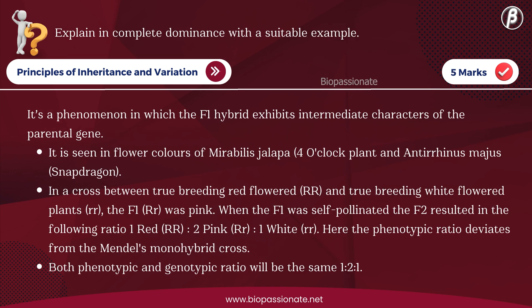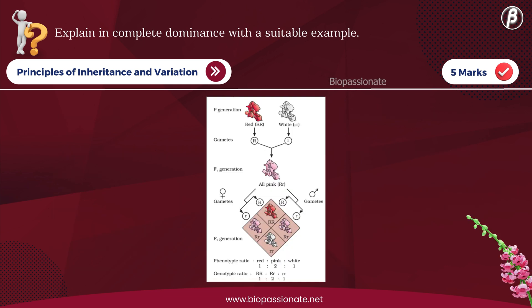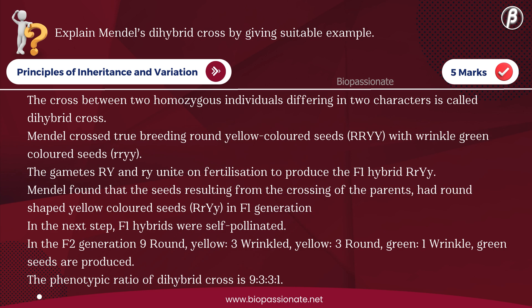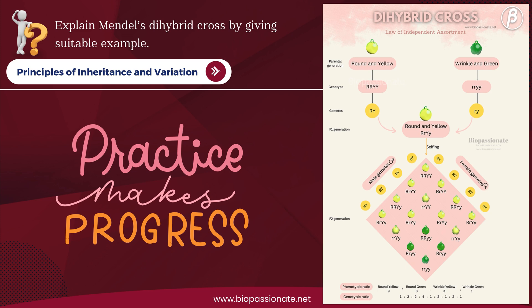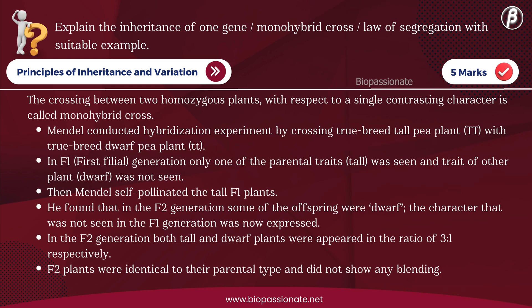Explain incomplete dominance with a suitable example — for five marks. Explain Mendel's dihybrid cross by giving a suitable example — for five marks. Explain the inheritance of one gene (monohybrid cross) and the law of segregation with a suitable example — for five marks.